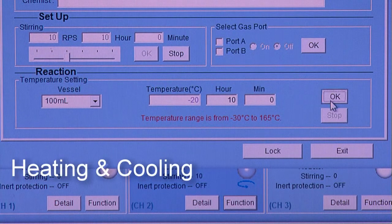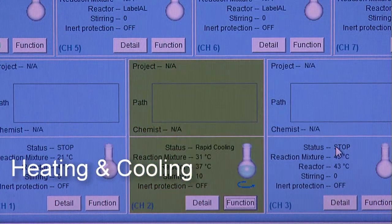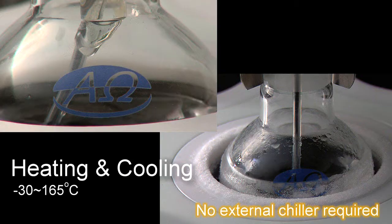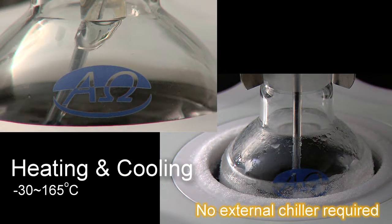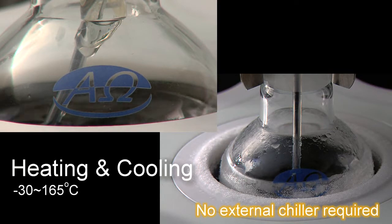Just set your desired temperature in Pro7 Pin. Pro7 then precisely controls the reaction temperature from minus 30 to 165 degrees Celsius.